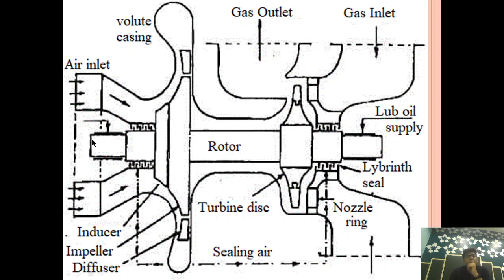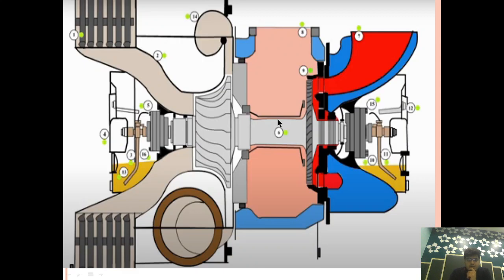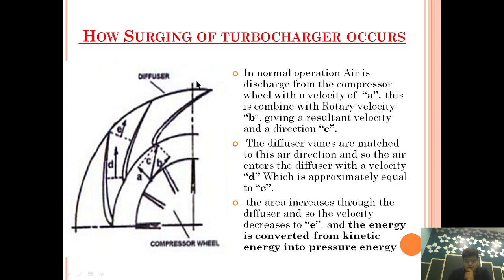Before beginning, I will give a synopsis of what we are going to cover. Surging is a phenomenon which occurs on the air side. In normal operation, air is coming from the turbocharger, and through the inducer and compressor mechanism it is gaining velocity. Through the diffuser and volute casing, the kinetic energy gained is converted into pressure energy, and then it goes to the scavenge manifold after being cooled by the air cooler.